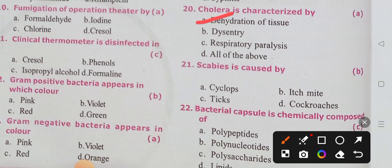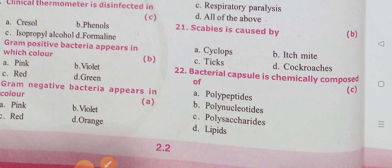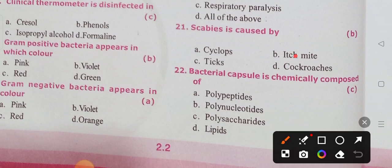Cholera is characterized by dehydration of the tissues — option A. Excessive watery stools are present in cholera, so water emitted from the body leads to dehydration. Scabies is caused by option B. Bacterial capsule is chemically composed of polysaccharides.